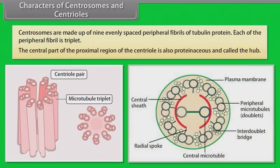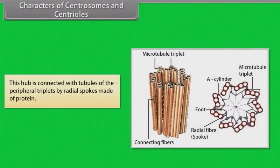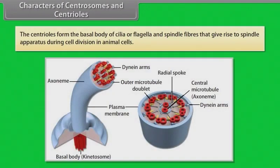The central part of the proximal region of the centriole is also proteinaceous and called the hub. This hub is connected with the tubules of the peripheral triplet by radial spokes made of protein. The centrioles form the basal body of cilia or flagella and spindle fibers that give rise to the spindle apparatus during cell division in animal cells.